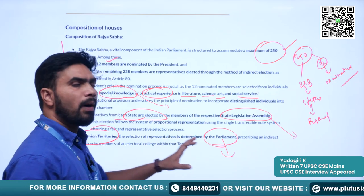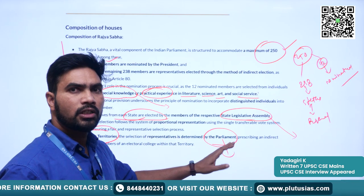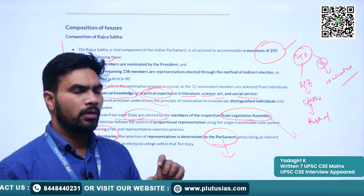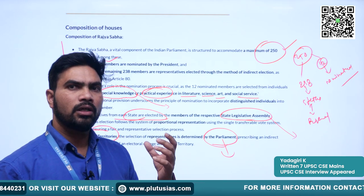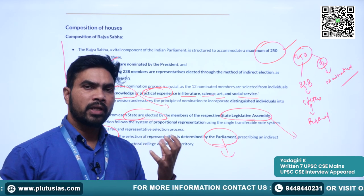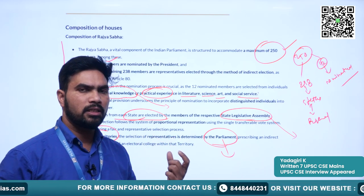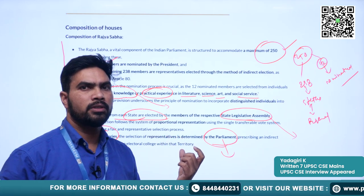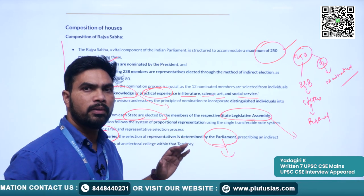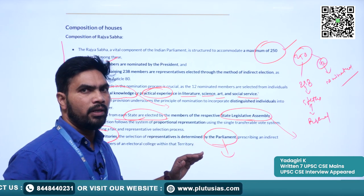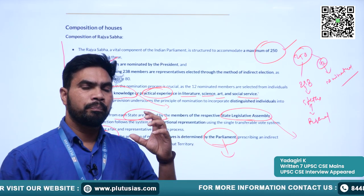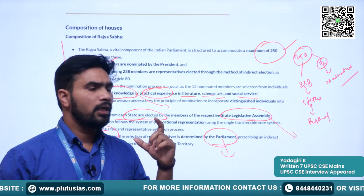For union territories to be represented in Rajya Sabha, Parliament takes the decision. It may prescribe a law and a method by which union territories can get representation in Rajya Sabha. Parliament has made certain acts for providing representation. Delhi, a special case as a union territory with its own assembly, sends a representative to Rajya Sabha through that assembly.